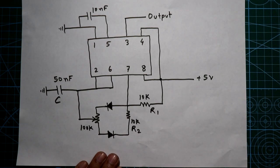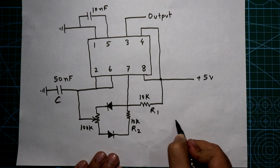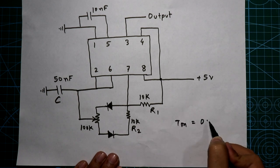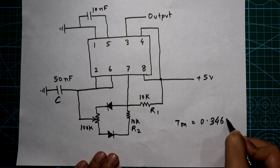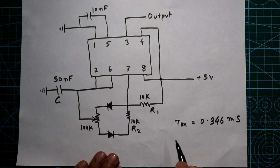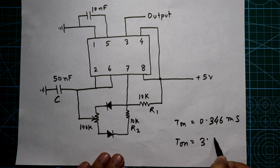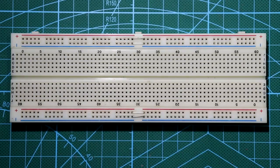So with this circuit we are getting the minimum T-on time as 0.346 milliseconds and the maximum T-on time as 3.811 milliseconds. Now let's see the breadboard connection.